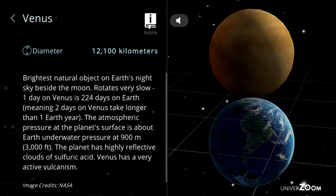Venus, diameter: 12,100 kilometers. Brightest natural object on Earth's night sky beside the Moon. Rotates very slow. One day on Venus is 224 days on Earth, meaning two days on Venus take longer than one Earth year. The atmospheric pressure at the planet's surface is about Earth underwater pressure at 900 meters, 3,000 feet. The planet has highly reflective clouds of sulfuric acid. Venus has a very active volcanism.